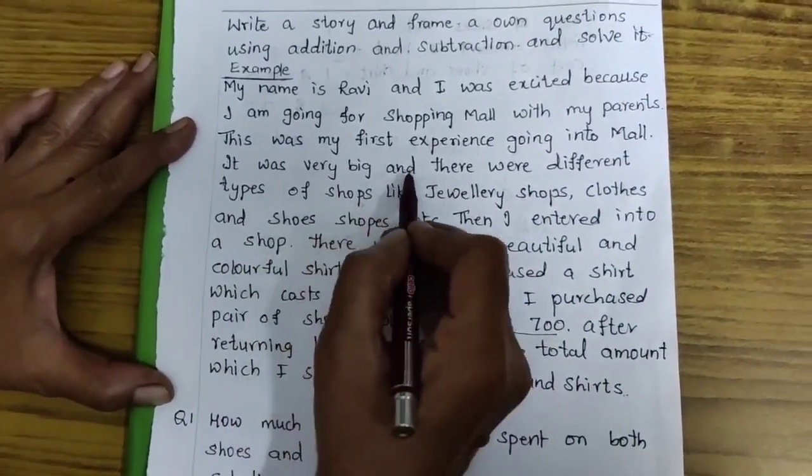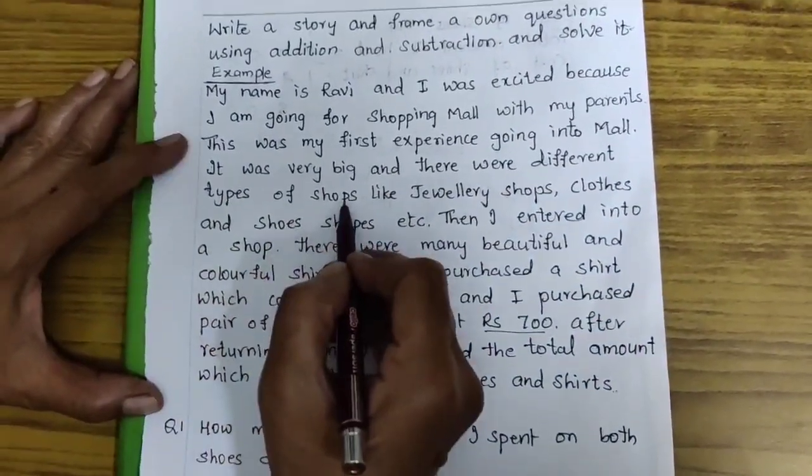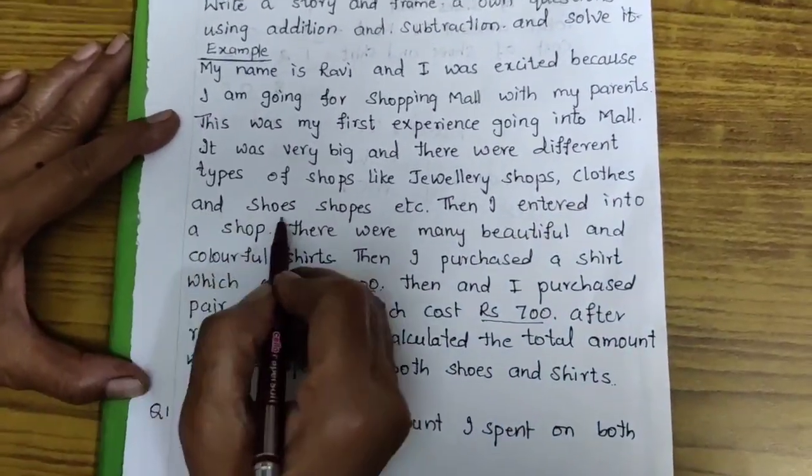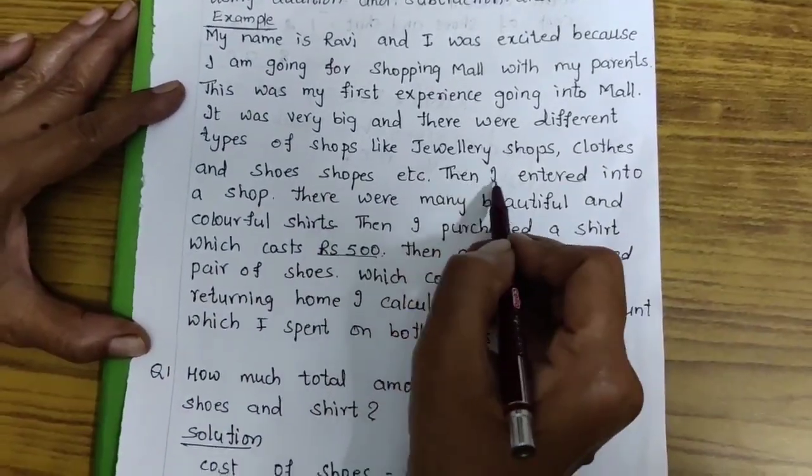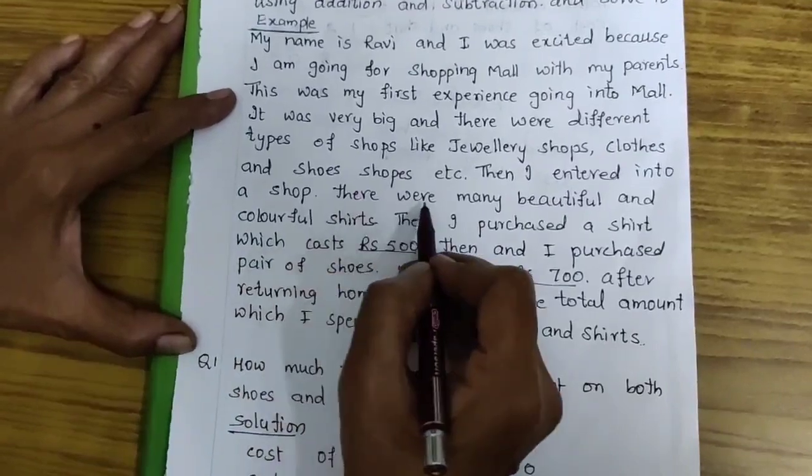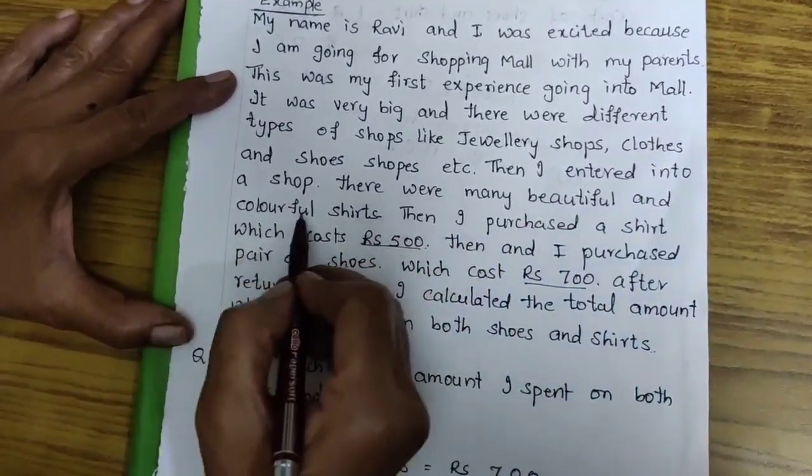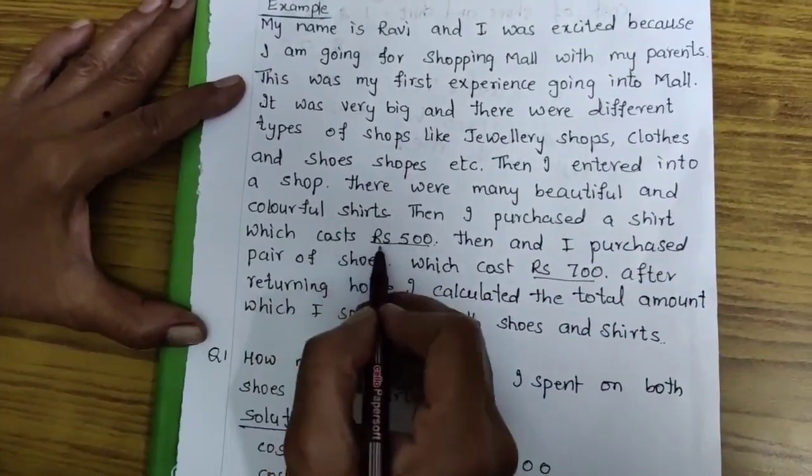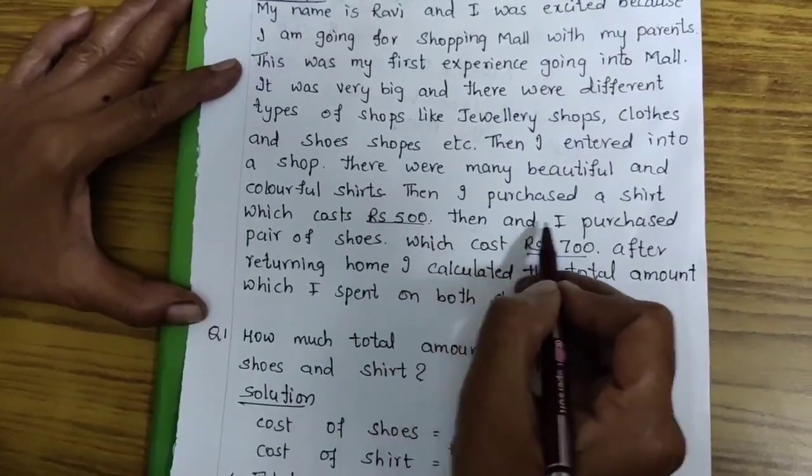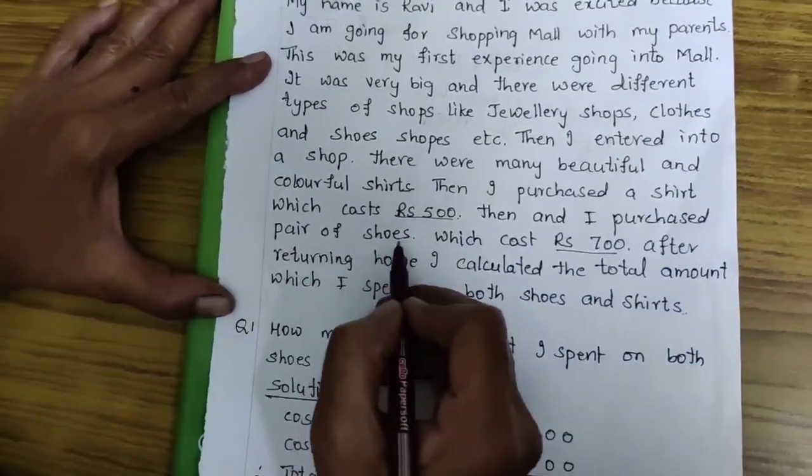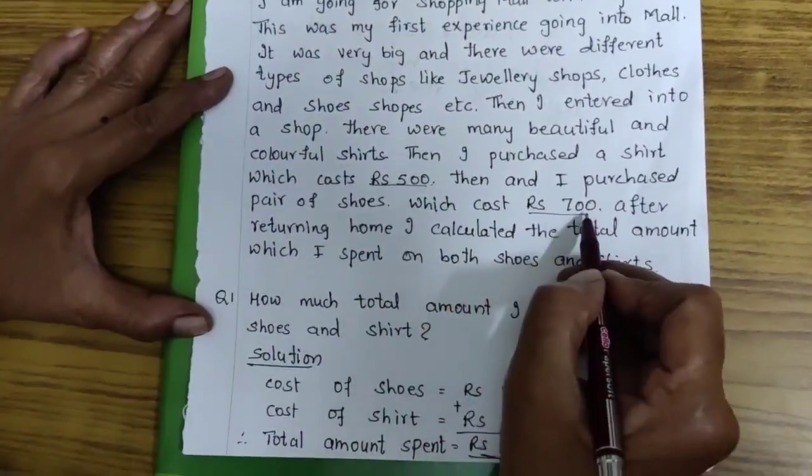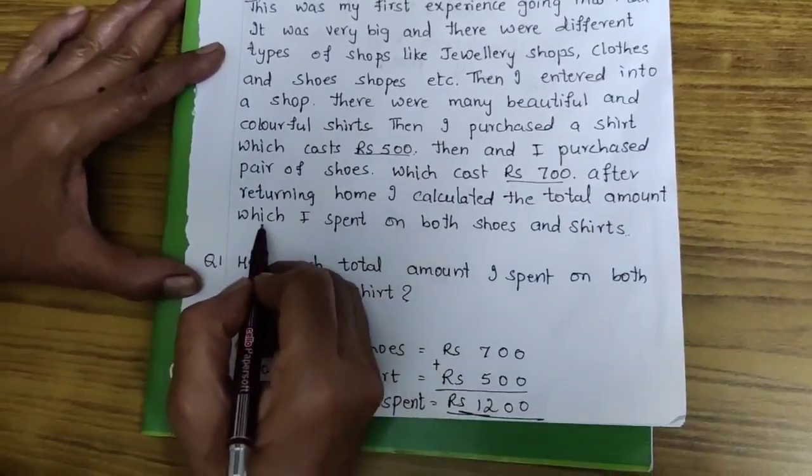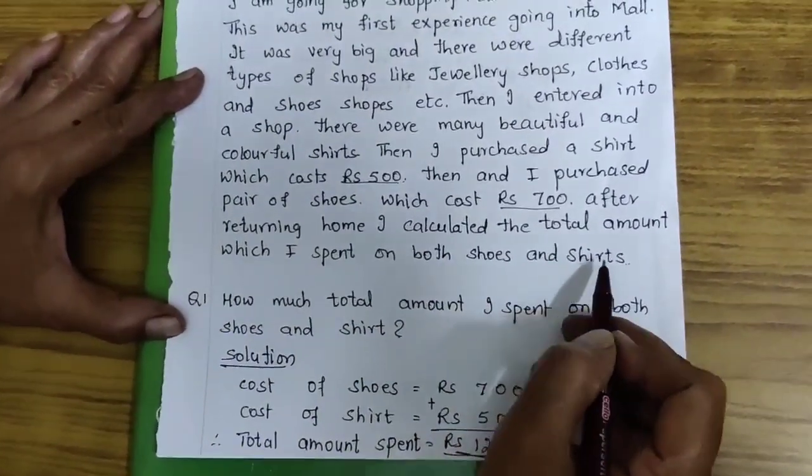It was very big and there were different types of shops like jewellery shops, clothes and shoe shops etc. Then I entered into a shop. There were many beautiful and colourful shirts. Then I purchased a shirt which cost Rs. 500. Then I purchased a pair of shoes which cost Rs. 700. After returning home, I calculated the total amount which I spent on both shoes and shirts.